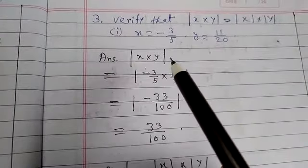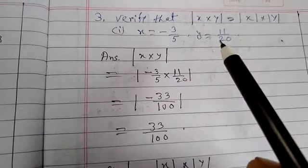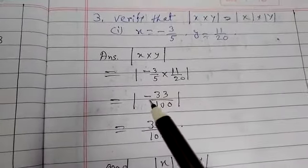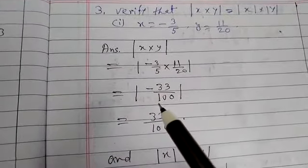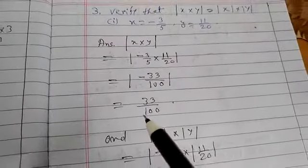Now |x · y| equals, we put the value of x and y here, equal to the product -33/100, equal to 33/100.